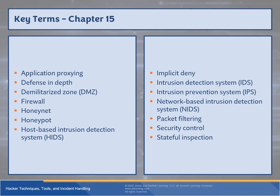Key terms for this chapter include: application proxying, defense in depth, demilitarized zone, firewall, honey net, honey pot, HIDS (host-based intrusion detection), implicit deny, IDS (intrusion detection system), IPS (intrusion prevention system), NIDS (network-based intrusion detection). HIDS and NIDS are largely the same concept but focus on either an individual host or the entire network. Other terms include packet filtering, security controls, and stateful inspection.